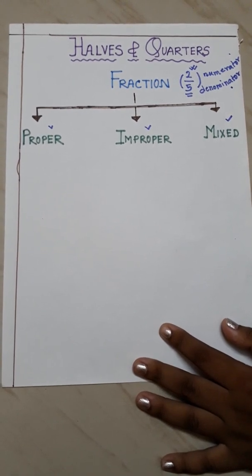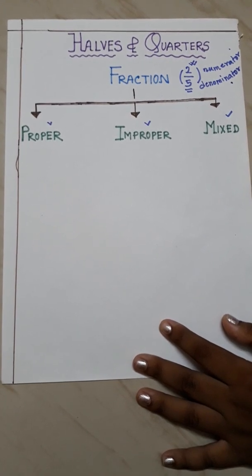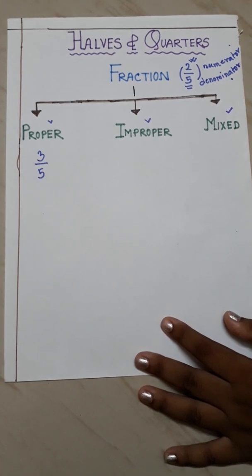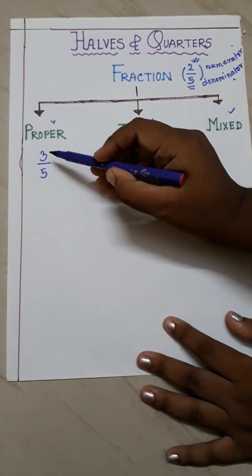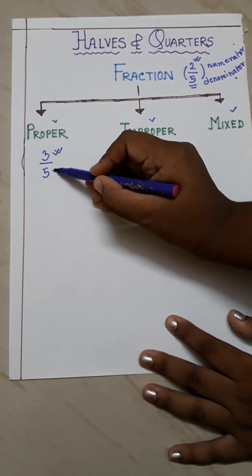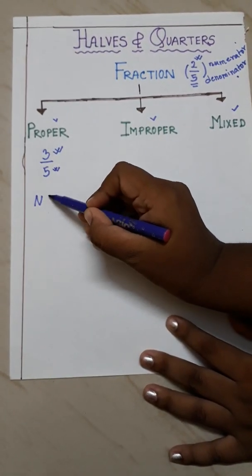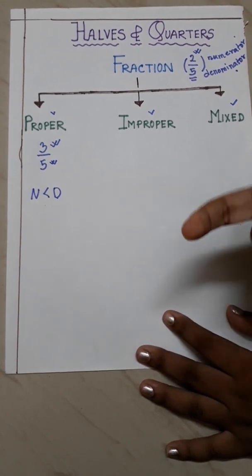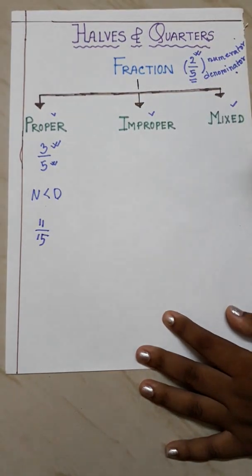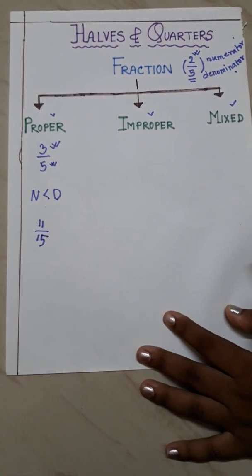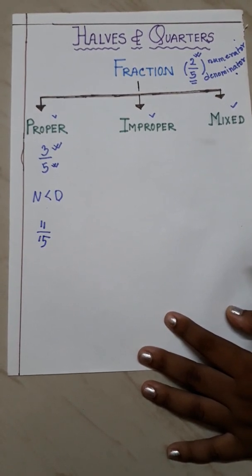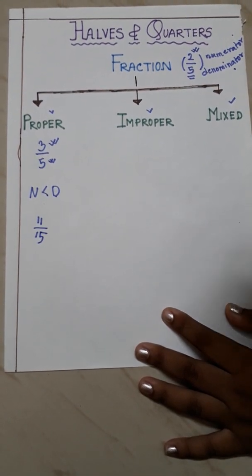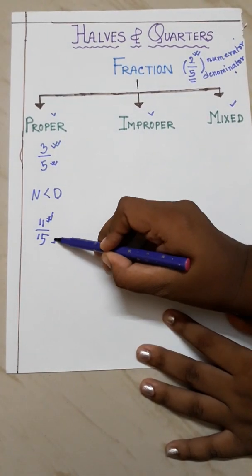What is a proper fraction? Proper fractions are those fractions where the numerator is less than the denominator. Suppose I am writing here 3 by 5. Here 3 is the numerator and 5 is the denominator. The numerator is smaller than the denominator, so 3 by 5 is a proper fraction. Another example: 11 by 15 is also a proper fraction because the numerator is smaller than the denominator.